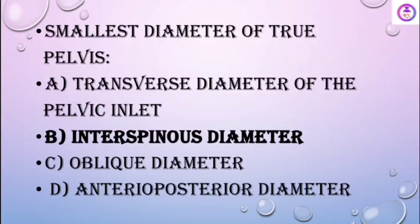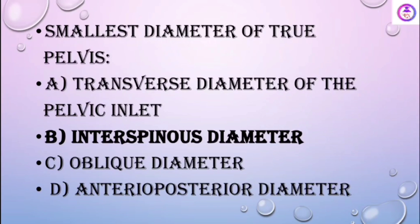Smallest diameter of the true pelvis: the smallest diameter in the true pelvis is the interspinous diameter. That is the smallest diameter.